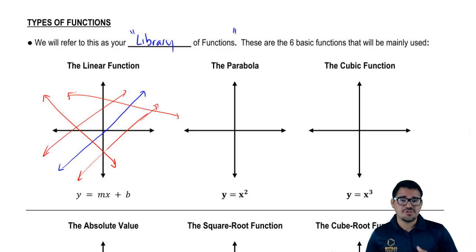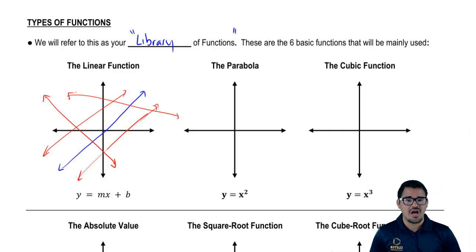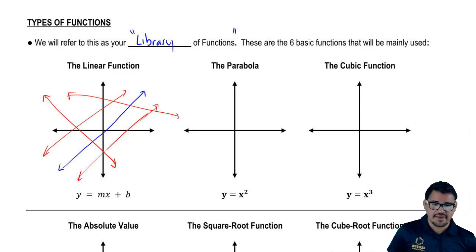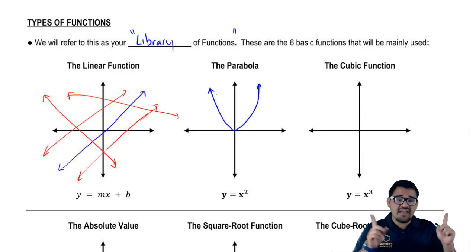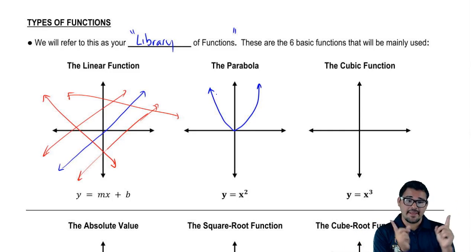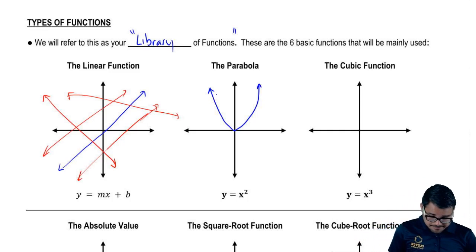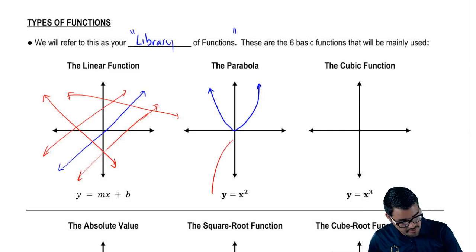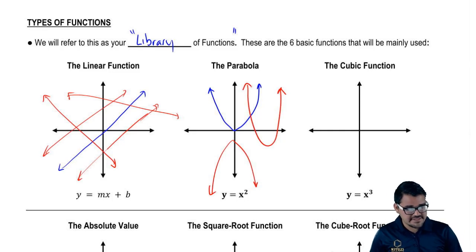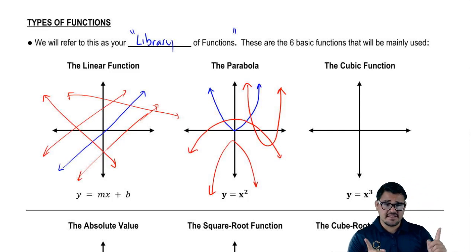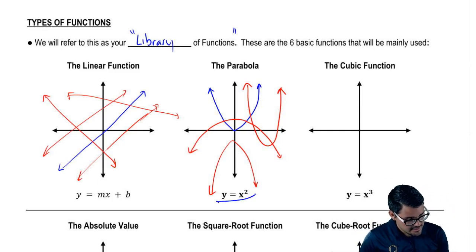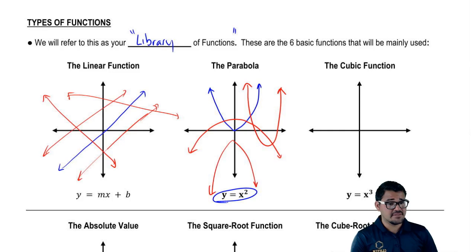The next function we're going to talk about is the parabola, which is probably the second most common function you'll be dealing with. In the most basic form of y equals x squared, both legs of the parabola open up the same way — in this case, both legs open up. We can also draw a variation where both legs open down, or it's a little fatter or skinnier. It is still a parabola. The idea is that both legs open the same way and it looks like a U-shape. The blue matches y equals x squared — when I say y equals x squared, think about the blue.